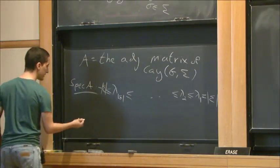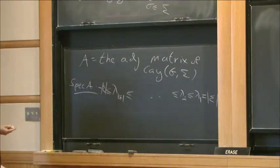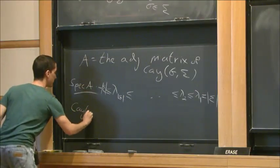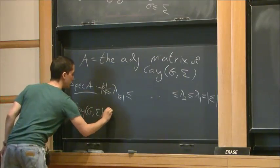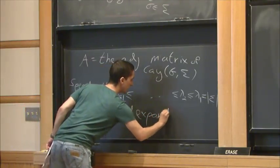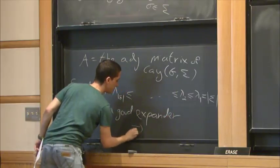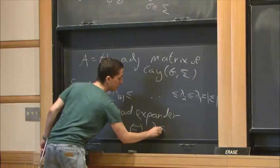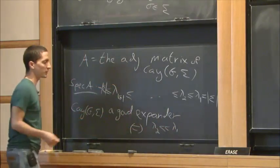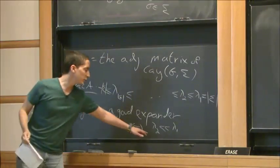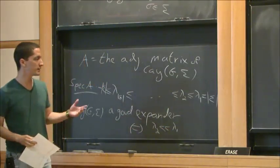And we generally ask, so many people ask, when is this Cayley graph a good expander? And this Cayley graph is a good expander in many ways if and only if the second eigenvalue lambda 2 is much smaller than lambda 1, or is bounded away from lambda 1. If we have a series of Cayley graphs where lambda 2 is bounded away from lambda 1, we say it's an expander.